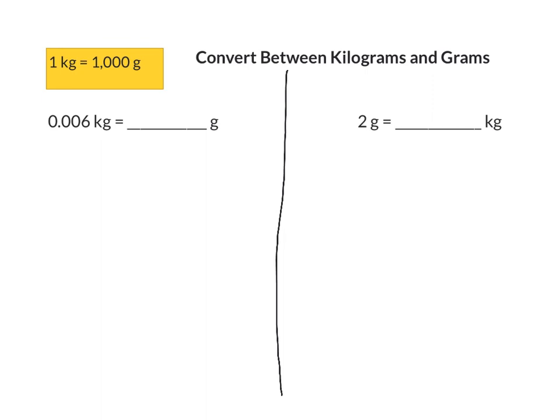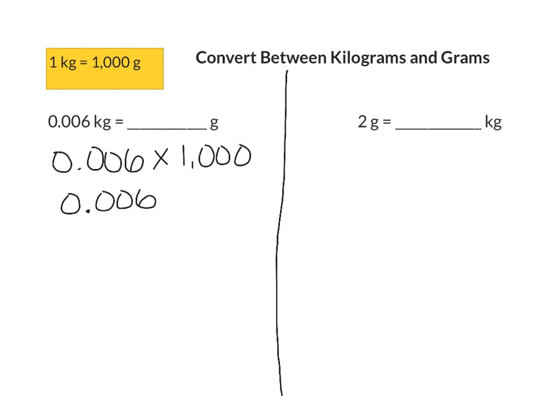Next we'll be converting between kilograms and grams. Remember, one kilogram is equal to 1,000 grams. First we'll go from kilograms to grams — when you go from kilograms to grams, you multiply by 1,000. So we take six thousandths kilograms and multiply by 1,000. When you multiply by 1,000, move your decimal point three places to the right — 1, 2, 3. That means six thousandths kilograms is equal to six grams.